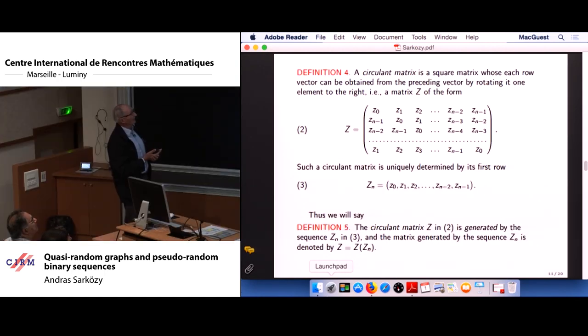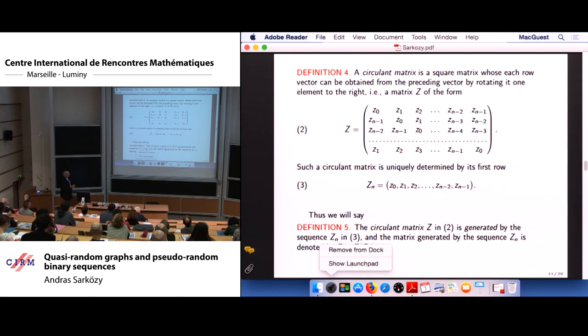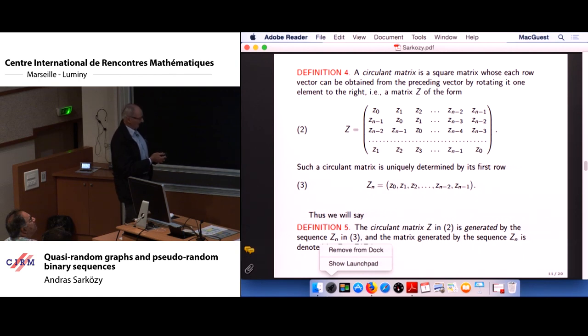We need the definition of circular matrix, sometimes also called cyclic matrix. It's a square matrix whose each row vector can be obtained from the preceding one by rotating it, one element to the right, or shifting it to the right, the same thing. And then we get a matrix of this form, denoted by capital Z, that you see there. So the second row is just a shift of the first row in the cyclic way and so on. Such a circular matrix is uniquely determined by its first row that I denote by capital Z_n, and then we will see that the circular matrix Z in the second formula is generated by the sequence, by the binary sequence z_1, z_2, ..., z_n in the formula.